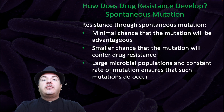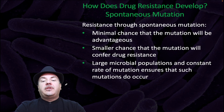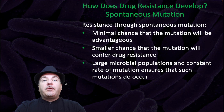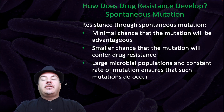How does drug resistance develop? One method is through spontaneous mutation. When there's a mutation, there is a minimal chance the mutation will be advantageous, and an even smaller chance the mutation will confer drug resistance. However, large microbial populations and a constant rate of mutation ensure that such mutations do occur.